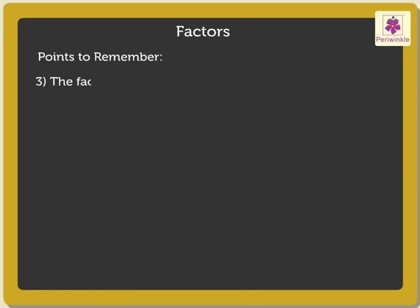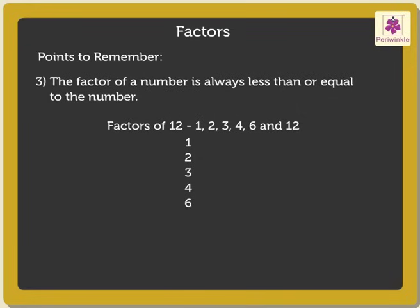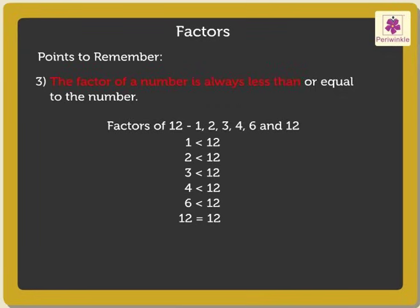Point 3: The factor of a number is always less than or equal to the number. Look at the factors of 12 which we found out earlier. They are 1, 2, 3, 4, 6 and 12. Note that the factors 1, 2, 3, 4 and 6 are less than 12. Thus, it shows that the factor of a number is always less than or equal to the number.